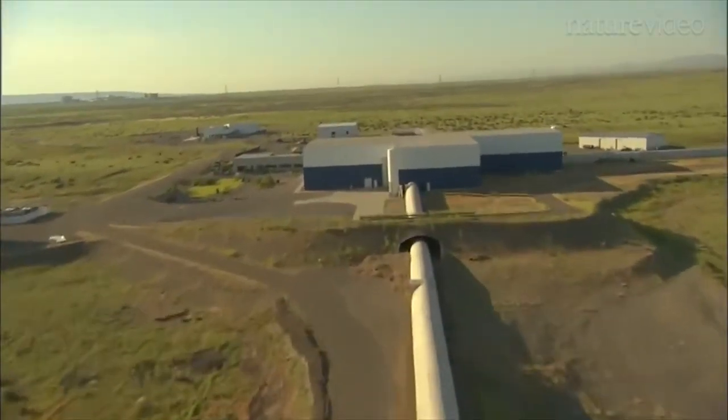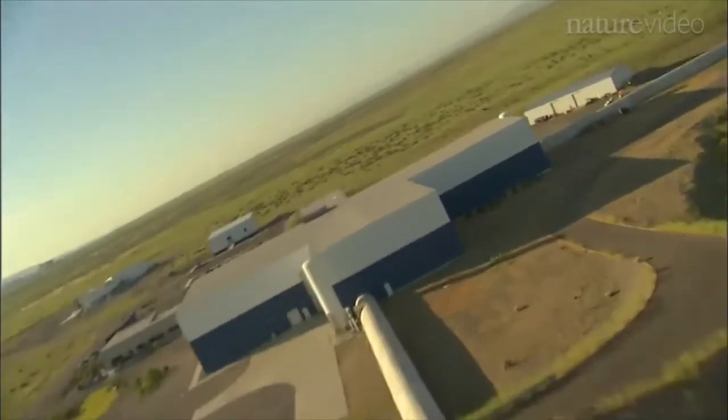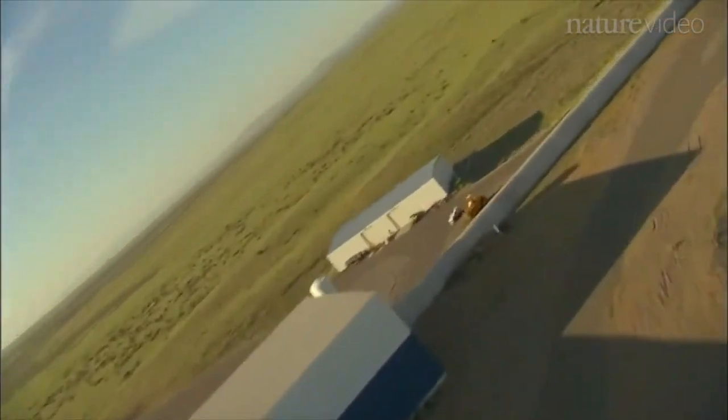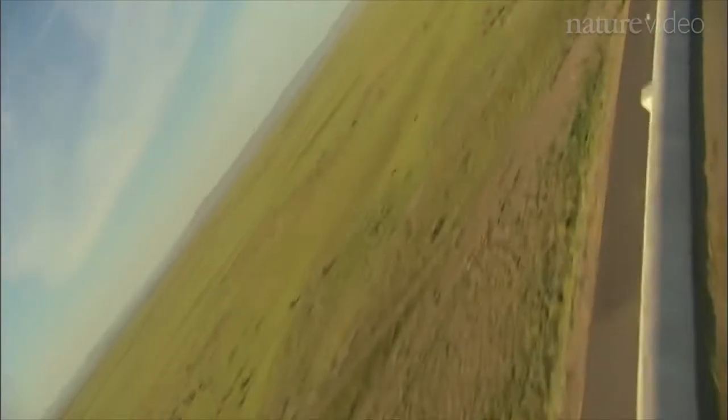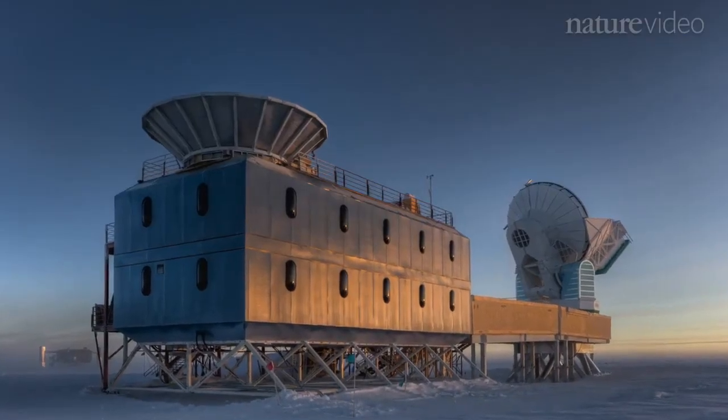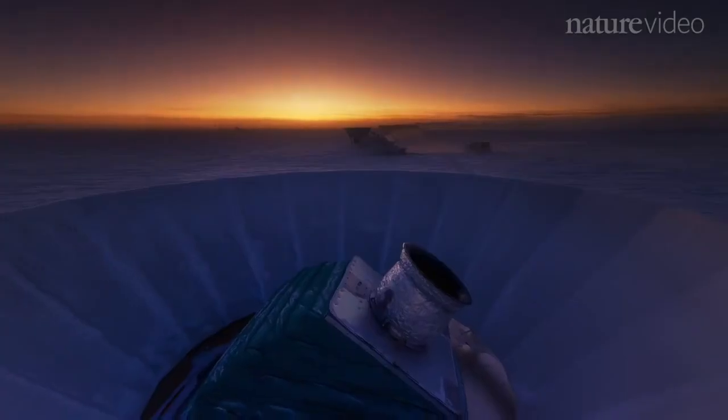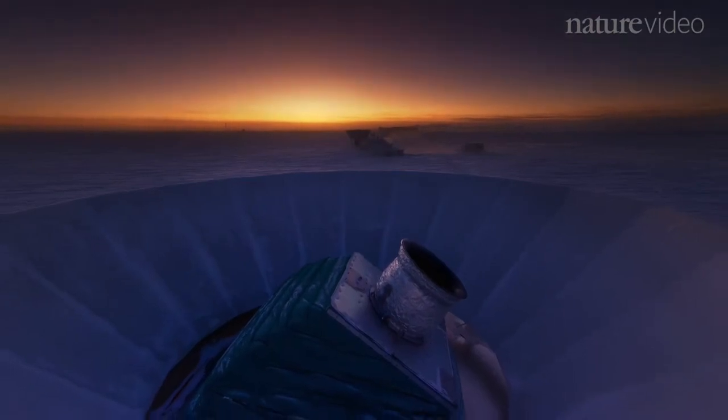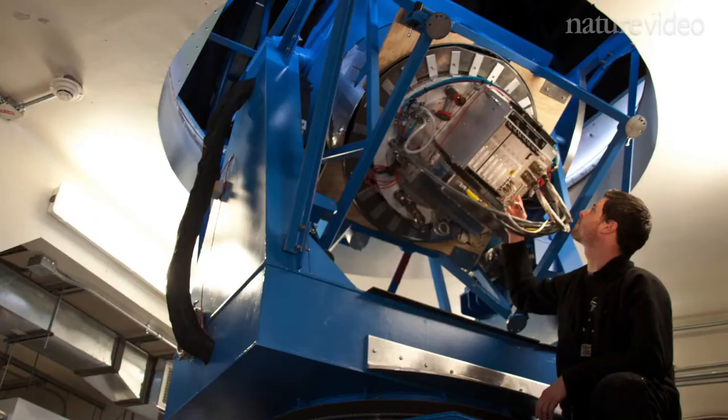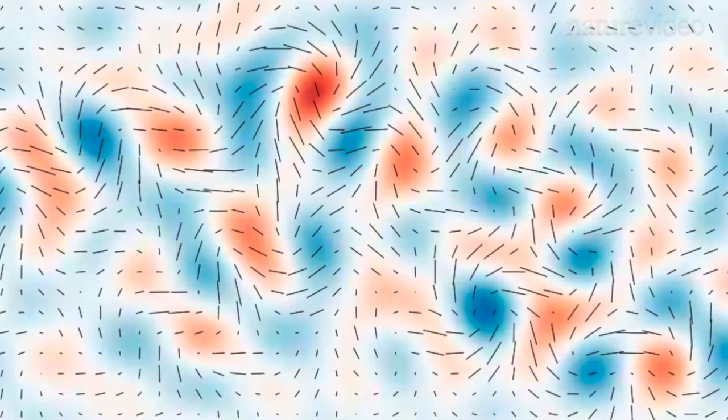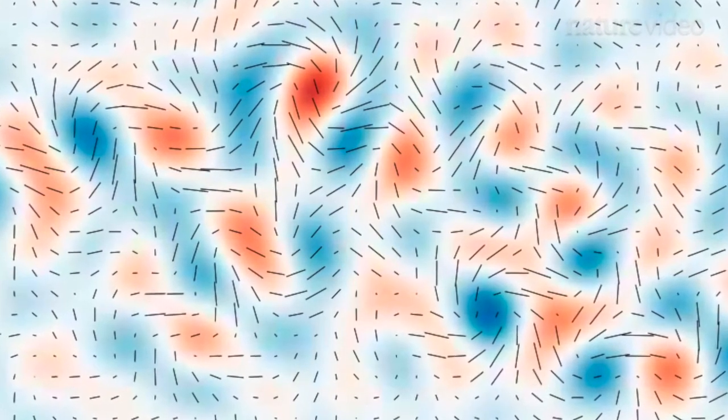LIGO is designed to directly measure gravitational waves. This is different from another experiment based at the South Pole called BICEP2, which made headlines back in 2014. BICEP2 is also looking for gravitational waves, but not directly. Instead, it looks for the imprint gravitational waves would leave on the cosmic microwave background. That's the afterglow of the Big Bang.